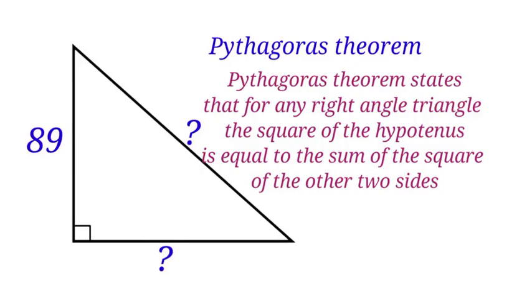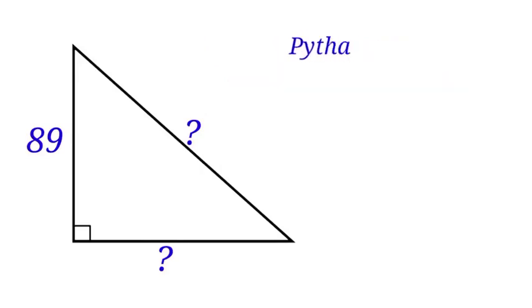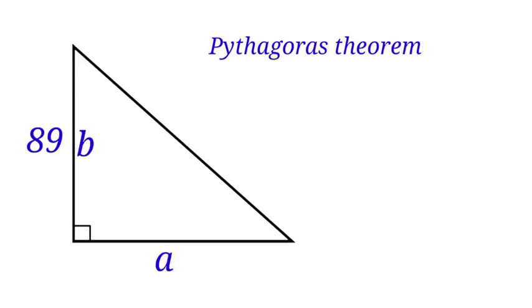Now, let us label the base of this triangle as A, the height as B, and the hypotenuse as C. When we apply Pythagoras theorem, we will have A squared plus B squared equals to C squared. Let us substitute our value in it. We will have A squared plus 89 squared equals to C squared.